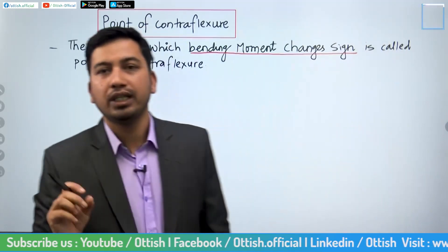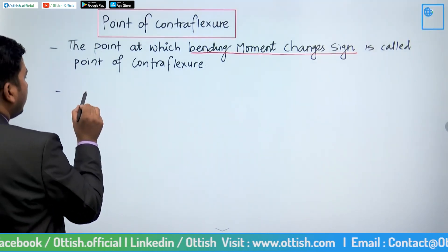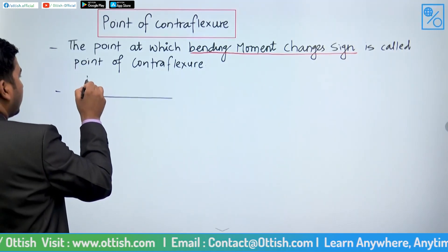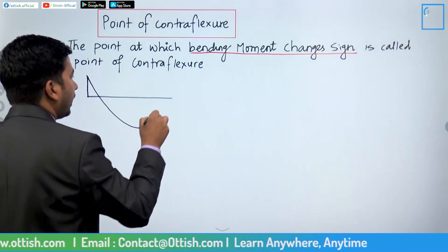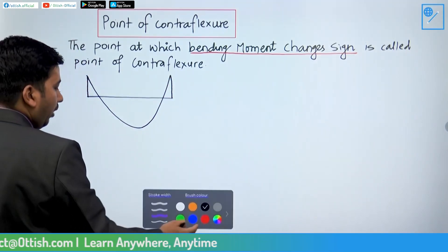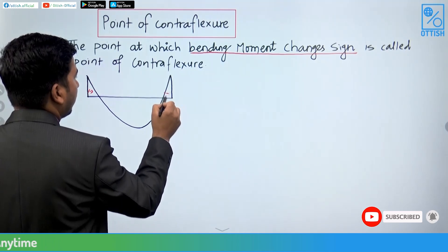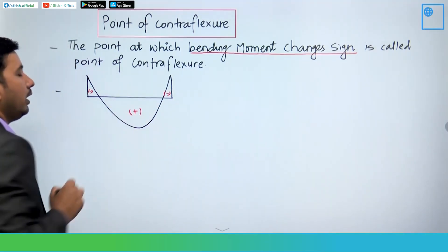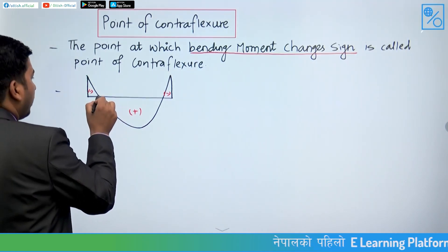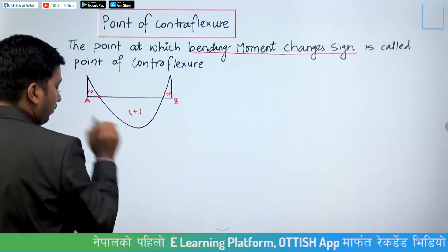This sign change means that in the bending moment diagram, suppose we have a beam and we plot the bending moment diagram — this side is a minus plot and this side is a plus plot of magnitude. So this is a plus and minus plot, meaning there are two points where the sign changes.